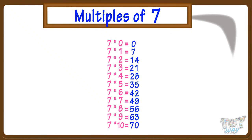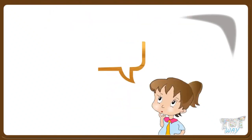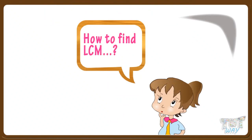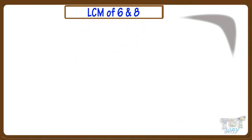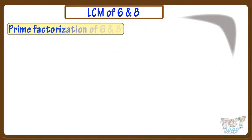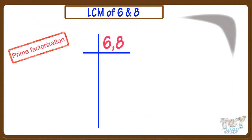Now let's learn how to find the LCM, or least common multiple, of 6 and 8 using prime factorization. We have to find the LCM of 6 and 8, so we will do the prime factorization of 6 and 8 first.